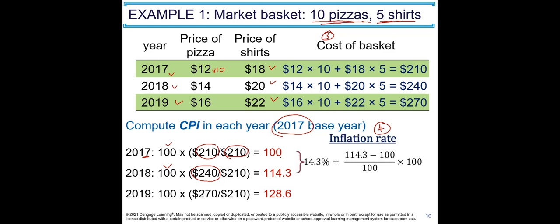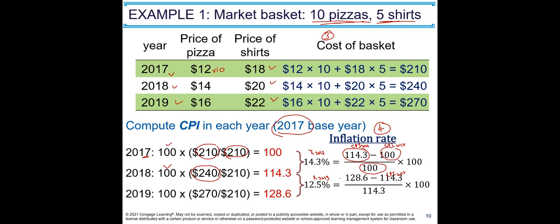The final step is to calculate the inflation rate — the change in CPI from one year to another. For 2018 inflation: (CPI 2018 − CPI 2017) / CPI 2017 × 100 = (114.3 − 100) / 100 × 100. For 2019 inflation: (CPI 2019 − CPI 2018) / CPI 2018 × 100 = (128.6 − 114.3) / 114.3 × 100 = 12.5 percent increase in prices from 2018 to 2019.